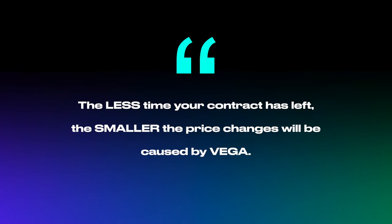Last but not least, Vega. As mentioned, Vega is correlated to implied volatility. You want to make sure that you buy or sell contracts only if implied volatility is in your favor, because at some point implied volatility will come back to its average and you'll make money just from that change. If you have a high Vega, you'll know exactly how much that change will be. Another important note: Vega declines the closer the option gets to the expiration date. So the closer you are to expiration, the smaller the Vega — meaning even if implied volatility changes a lot, the option contract won't change much. The less time your contract has left, the smaller the price changes caused by Vega.